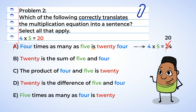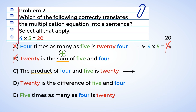Now look at option B — it says sum. The sum is the answer to an addition problem, so we can just cross that one out since we're working with multiplication here. Option C has the word product, which indicates multiplication. Let's make sure the multiplication equation is correct, unlike option A. The product of four and five means four times five. Is means equals, so four times five equals 20. Yes, that's correct. Option D has the word difference — difference would be used if we were using subtraction, so option D is not correct.